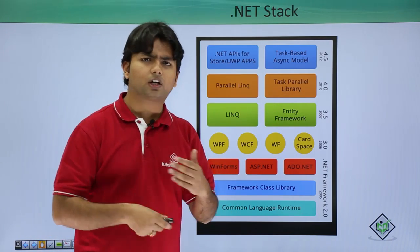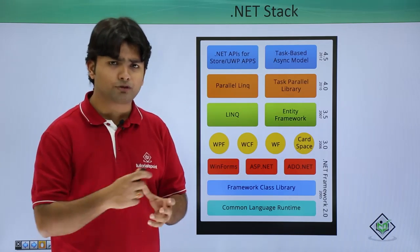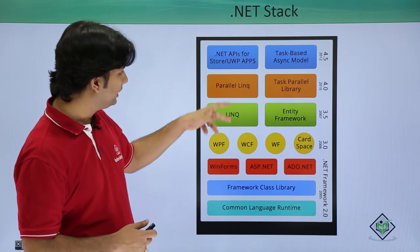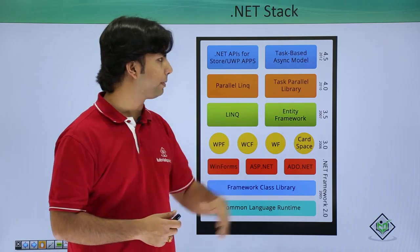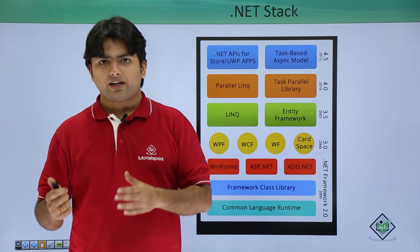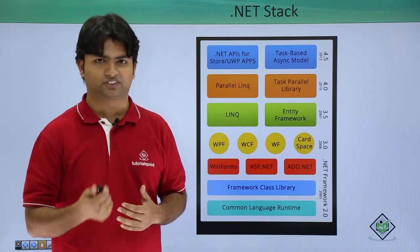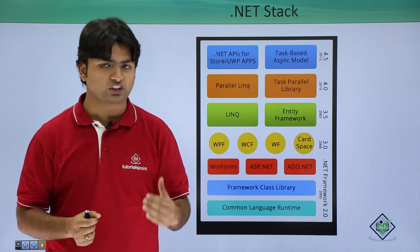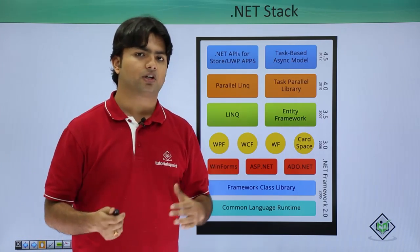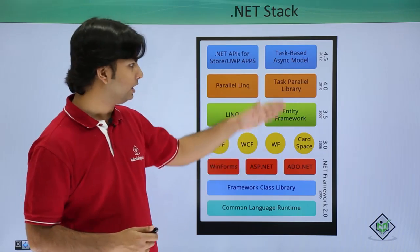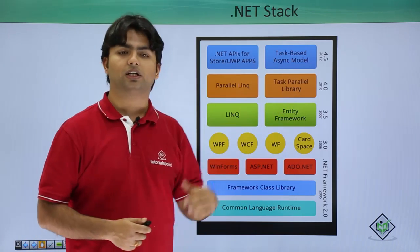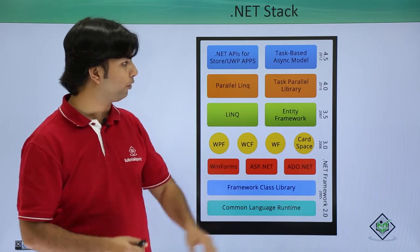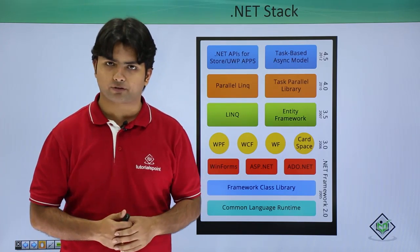With version 4.0, parallel programming was introduced: LINQ became Parallel LINQ and the Task Parallel Library was added. Modern processors have multiple cores, but traditional programming only uses a single core. To achieve better execution, parallel programming allows working across multiple cores simultaneously. Version 4.5 introduced asynchronous programming to take this even further.